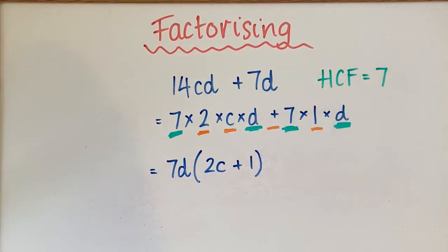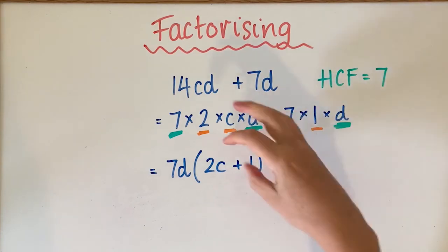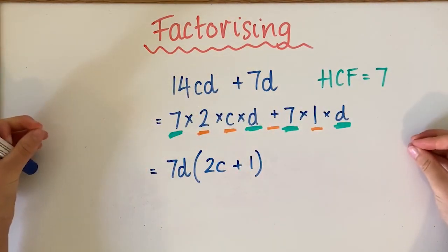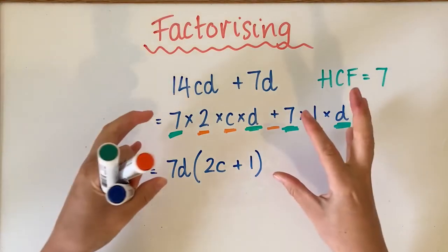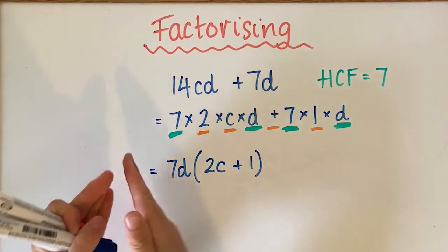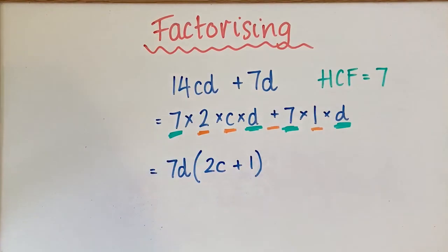When you're factorizing, you need to first find the highest common factor. Use that to stretch out your expression. Then everything that is the same goes out the front, and everything that is different goes on the inside.